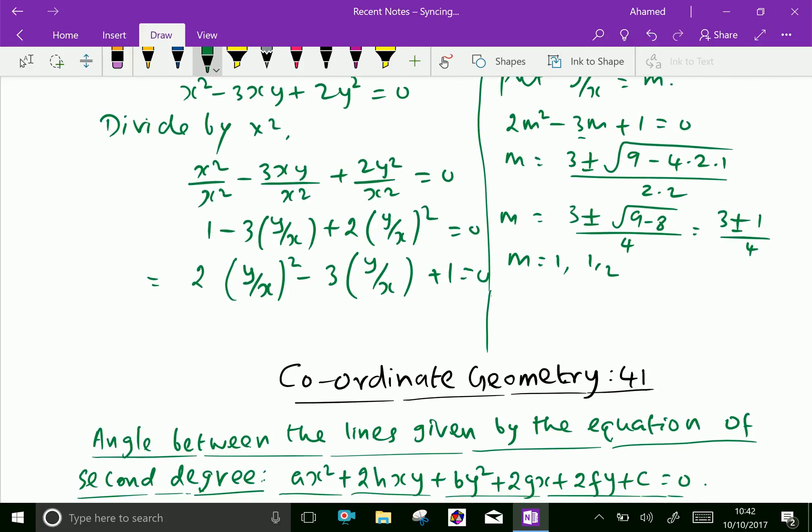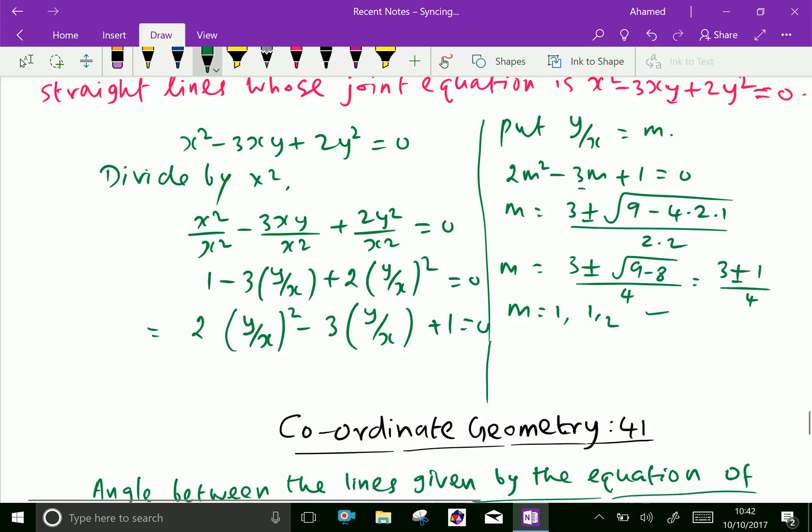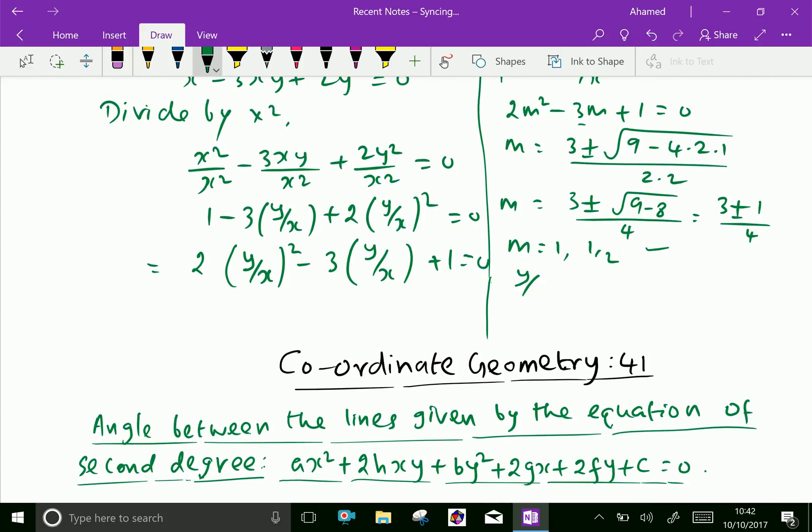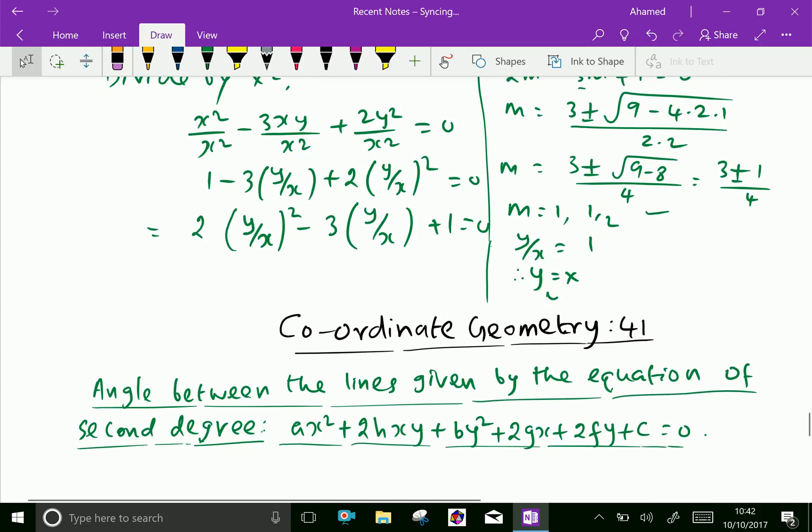So, we got two values of m, that substitute m is y by x equal 1, therefore y equal x, also y minus x equal to 0 is the first equation.